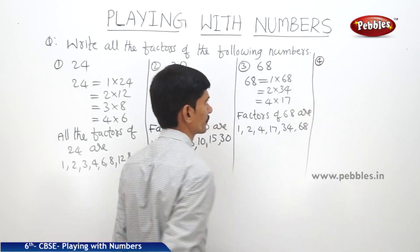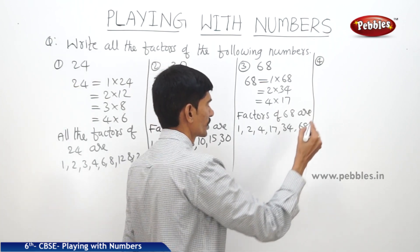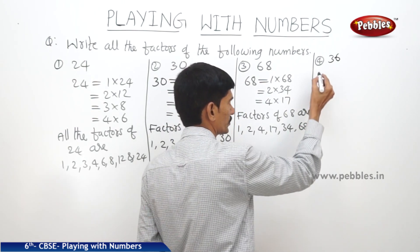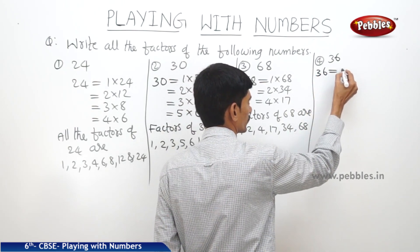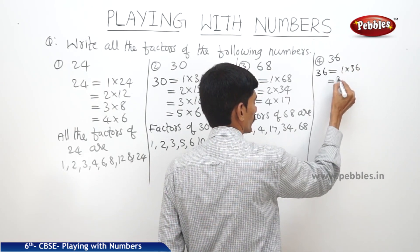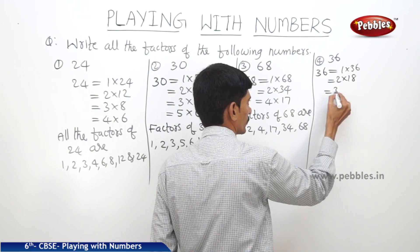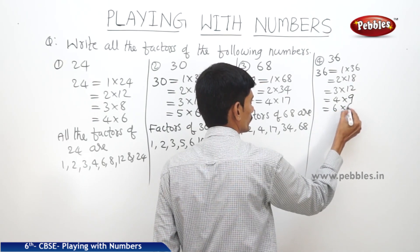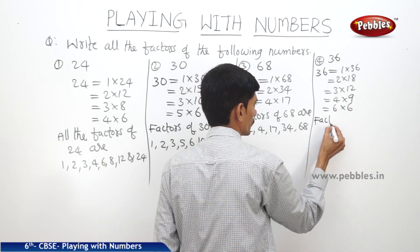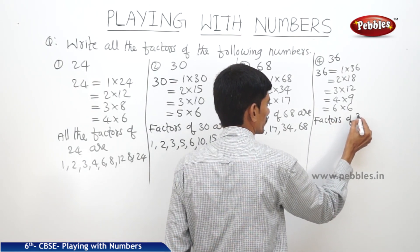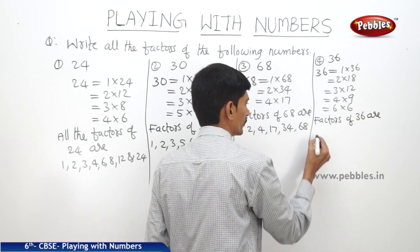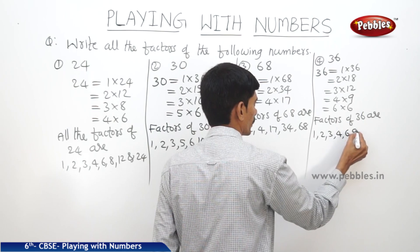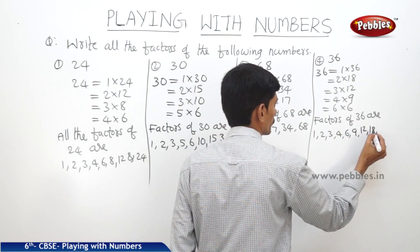The fourth number is 36. Writing 36 as a product of two numbers: 1 into 36, 2 into 18, 3 into 12, 4 into 9, and 6 into 6. So the factors of 36 are 1, 2, 3, 4, 6, 9, 12, 18, and 36.